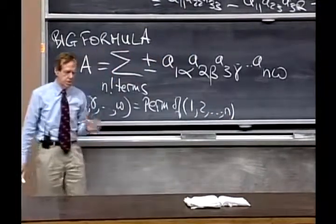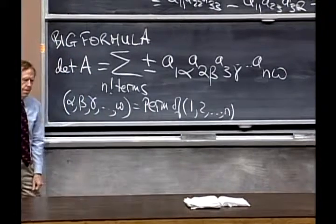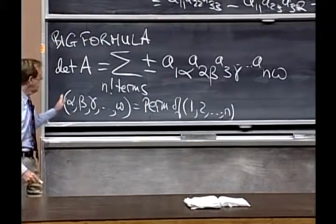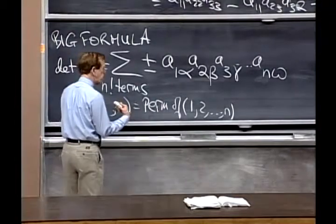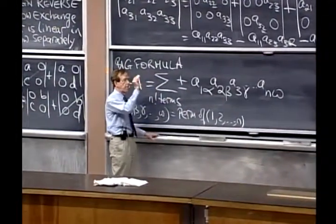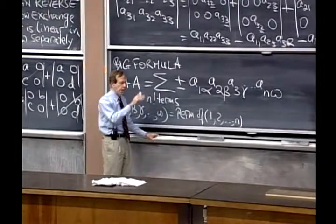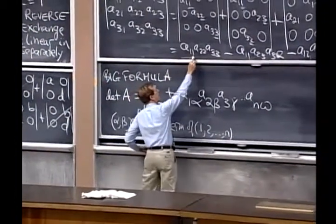The n column numbers are each used once. And that gives us n factorial terms, and when I choose a term, that means I'm choosing somebody from every row and column.